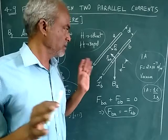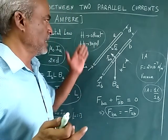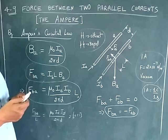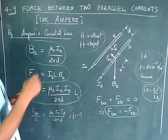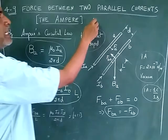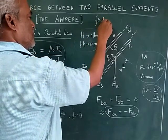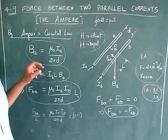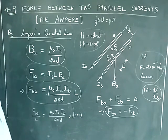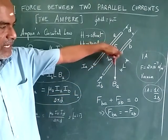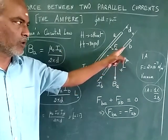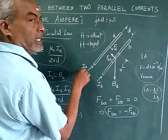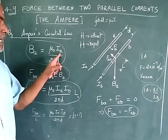By Ampere's circuital law, B into the total surface, which is 2πd, gives the closed line integral of B·dl equal to μ₀I. In this case, 2πd where d is the distance between the two wires. So BA, the magnetic flux density at conductor B due to current IA, is equal to μ₀IA divided by 2πd.